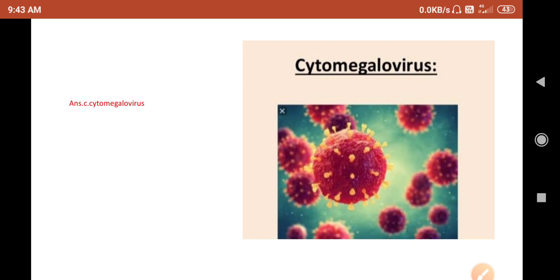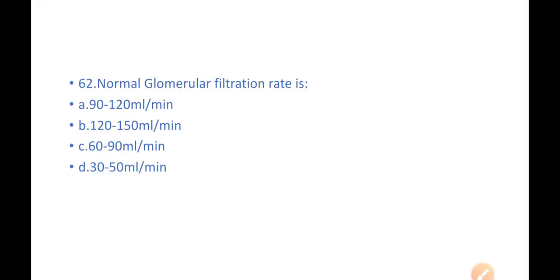Next question: the normal glomerular filtration rate is: A) 90 to 120 ml per minute, B) 120 to 150 ml per minute, C) 60 to 90 ml per minute, D) 30 to 50 ml per minute. Everyone knows that normal GFR ranges from option A, that is 90 to 120 ml per minute, but it differs from age to age.